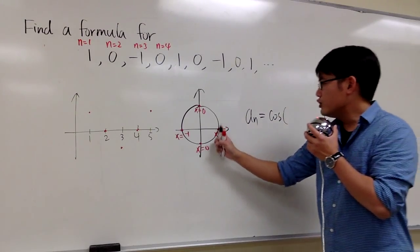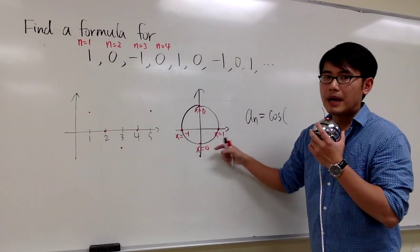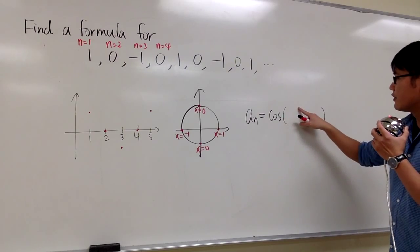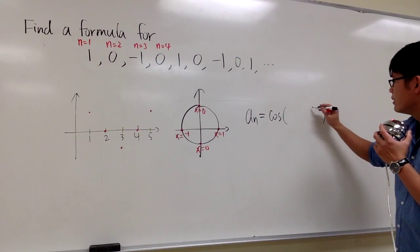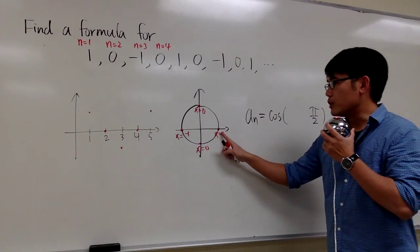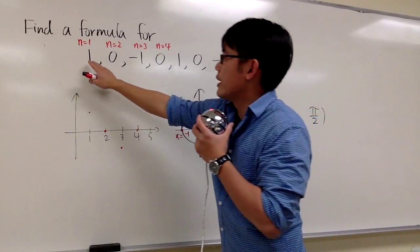And you see that each every time, we kind of just turn pi over 2 radians, right? So it must be some kind of multiple of pi over 2. So let me put down pi over 2 right here. And I want to start with 1 right here, right? The result is 1.